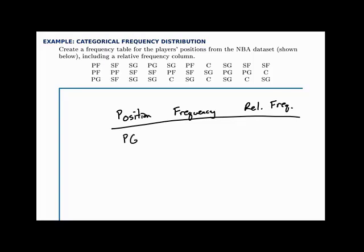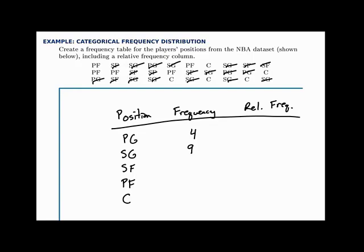The five positions are point guard, shooting guard, small forward, power forward, and center. We go through and count how many there are of each one. For point guards, we have four. For shooting guards, we count nine. For small forwards, seven. For power forwards, five. And for centers, five. Notice that if we add up those frequencies, we should get the total number we have, which is 30. You can check that by adding those frequencies.